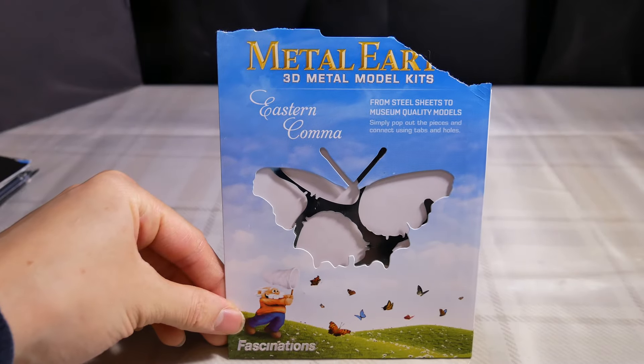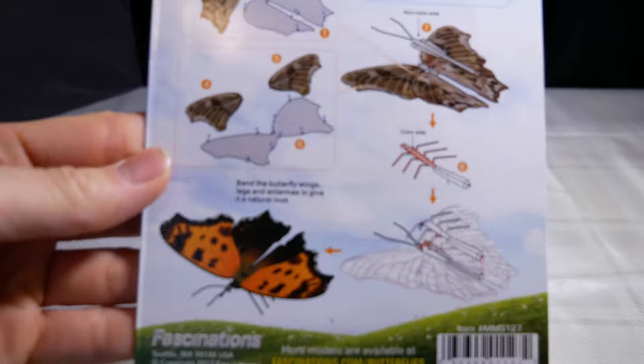Alright, the Eastern Comma by Metal Earth. Can't see a picture of it, maybe you can't, but here it is. The colors don't show that well, but they do show pretty well in the white light. Here we go.